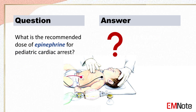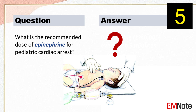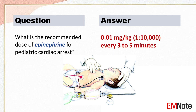What is the recommended dose of epinephrine for pediatric cardiac arrest? The recommended dose of epinephrine for pediatric cardiac arrest is 0.01 mg per kg every 3 to 5 minutes.